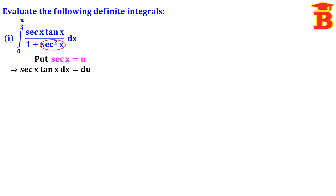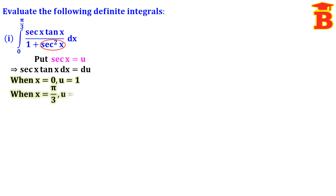We have to change the limit also, because in the question the given limit is only for x. Since we are changing from x to u, we have to change the limit as well. If you put x equal to 0, sec 0 is 1, so we get u equal to 1. If you put x equal to π/3, sec π/3 is 2, so we get u equal to 2.